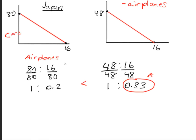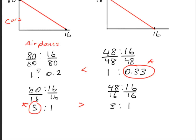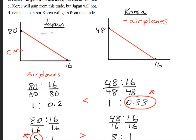Now we'll figure out who has the comparative advantage for cars. We do 80 to 16 again, but this time we divide by 16, giving us 5 for Japan. Then we repeat for Korea — 48 to 16, divide by 16, gives us 3. So 5 is greater than 3, and this quantity belongs to Japan, meaning Japan has the comparative advantage for making cars.